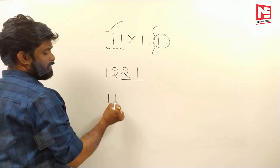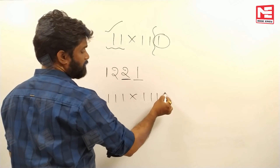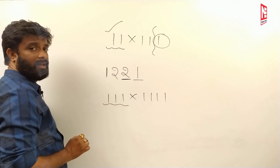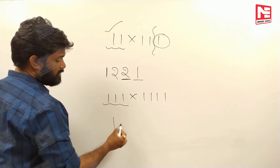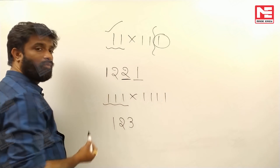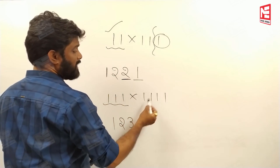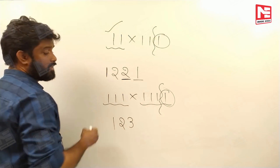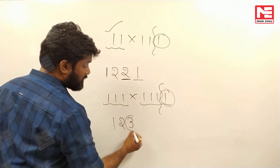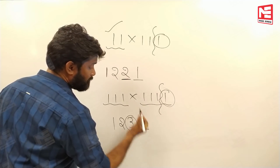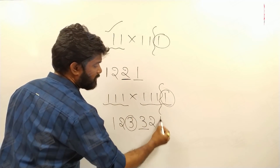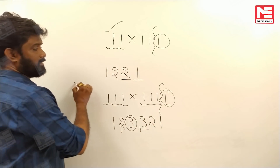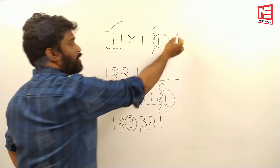Another example: 111 into 1111 — three ones and four ones. Focus on the smaller (3): write 1, 2, 3. The greater number has one extra one, so repeat 3 once more: 1, 2, 3, 3. Then come back descending: 2, 1. The answer is 123321, which is one lakh twenty-three thousand three hundred twenty-one.